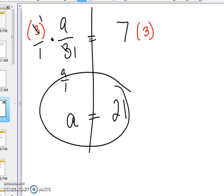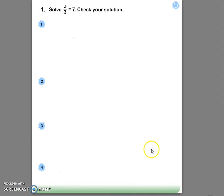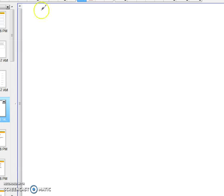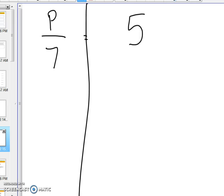Let's try another one so you can take a look at what it looks like. P over 7 equals 5. So let's try that one. P over 7 equals 5. Again, draw your arrow through the middle.